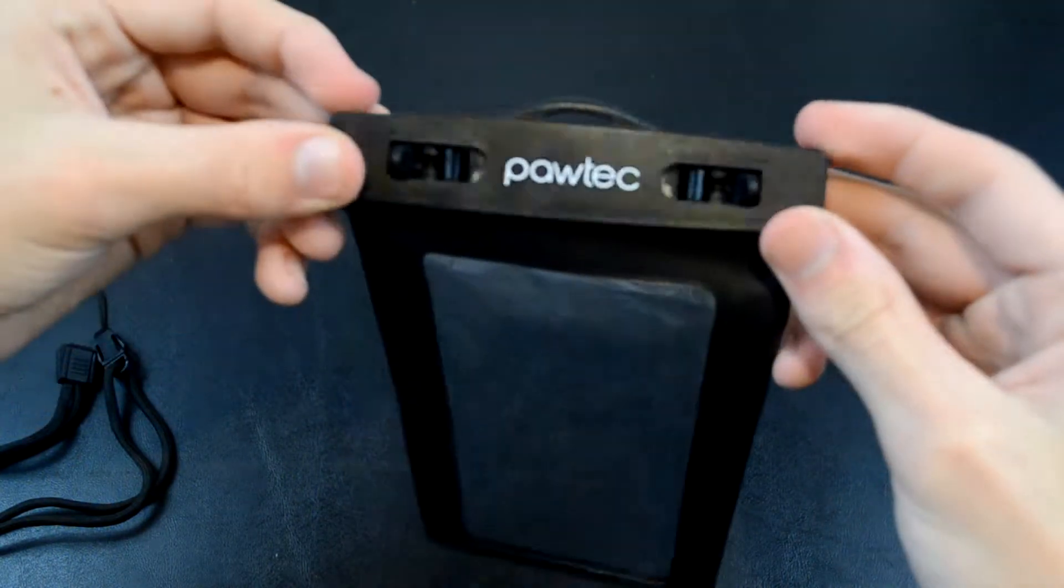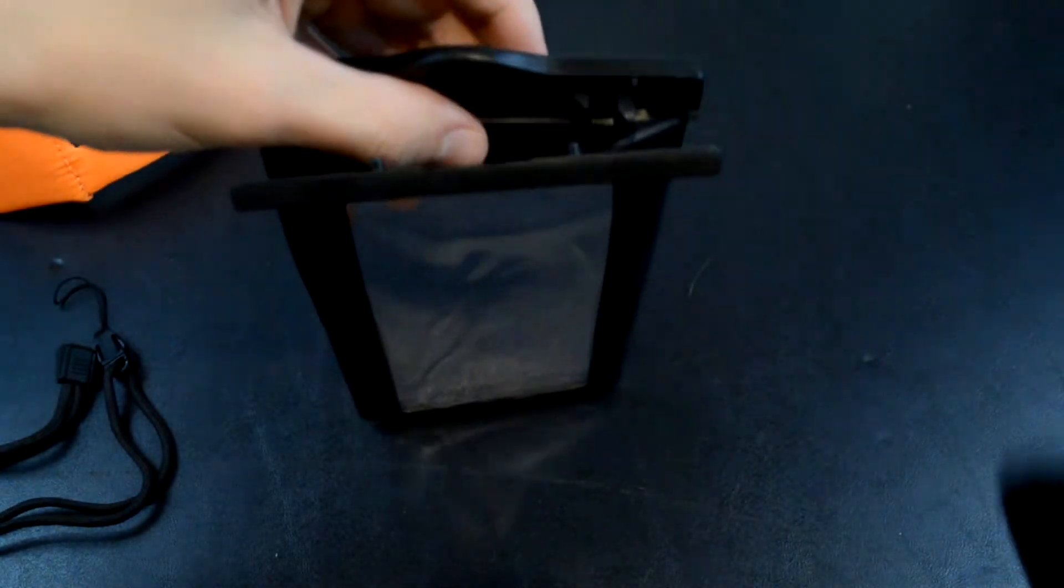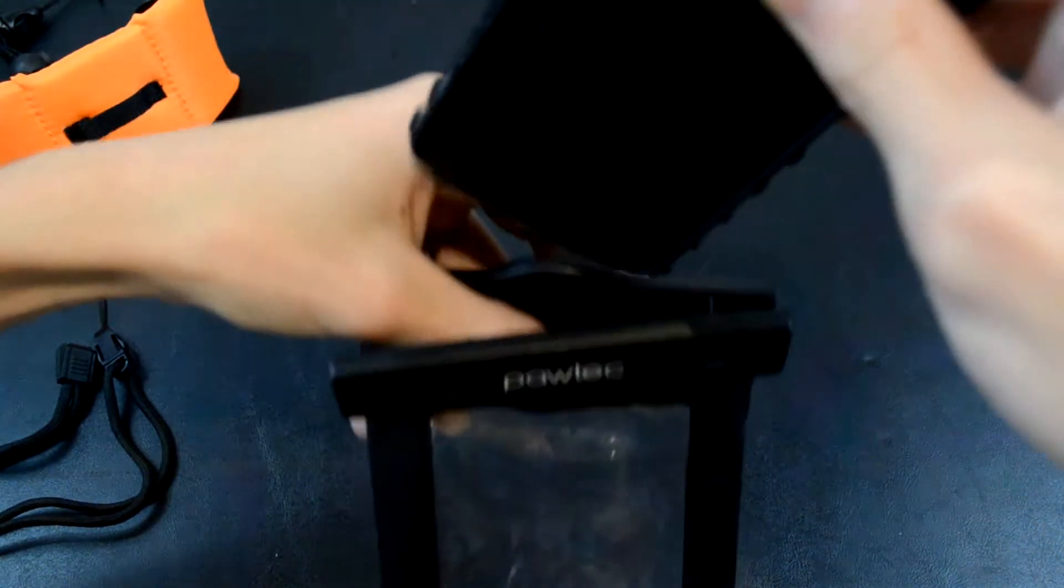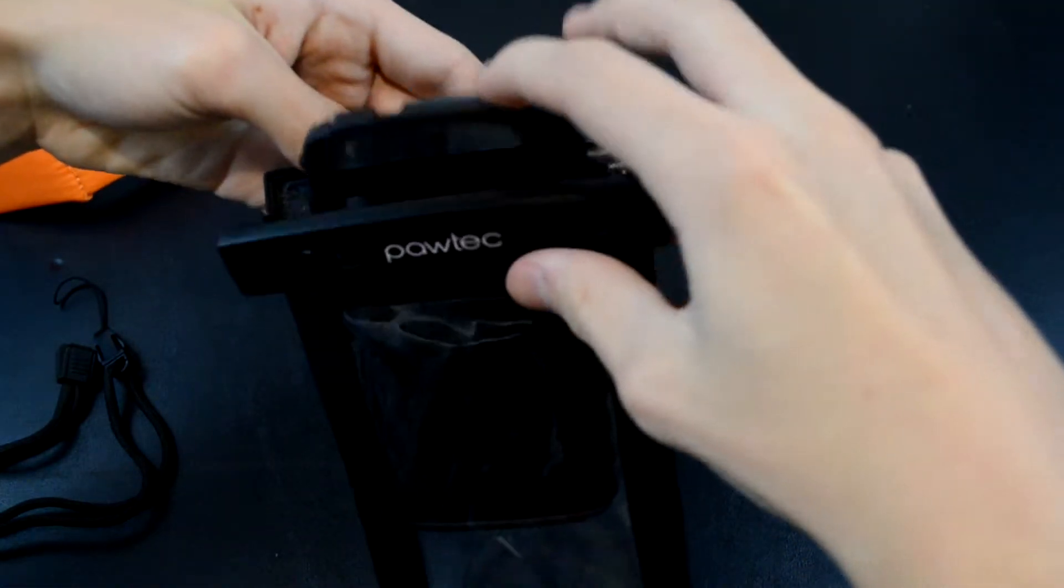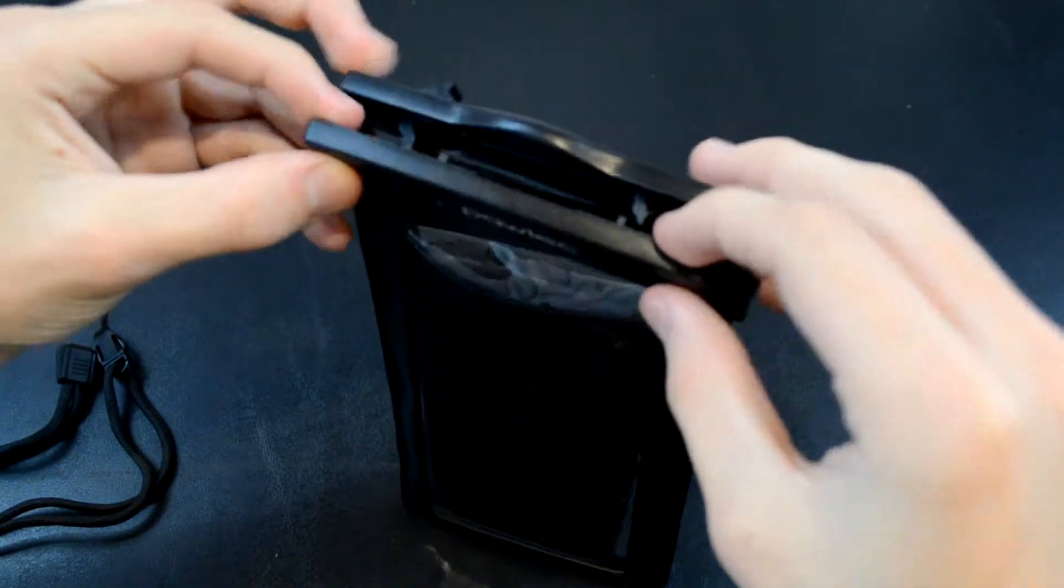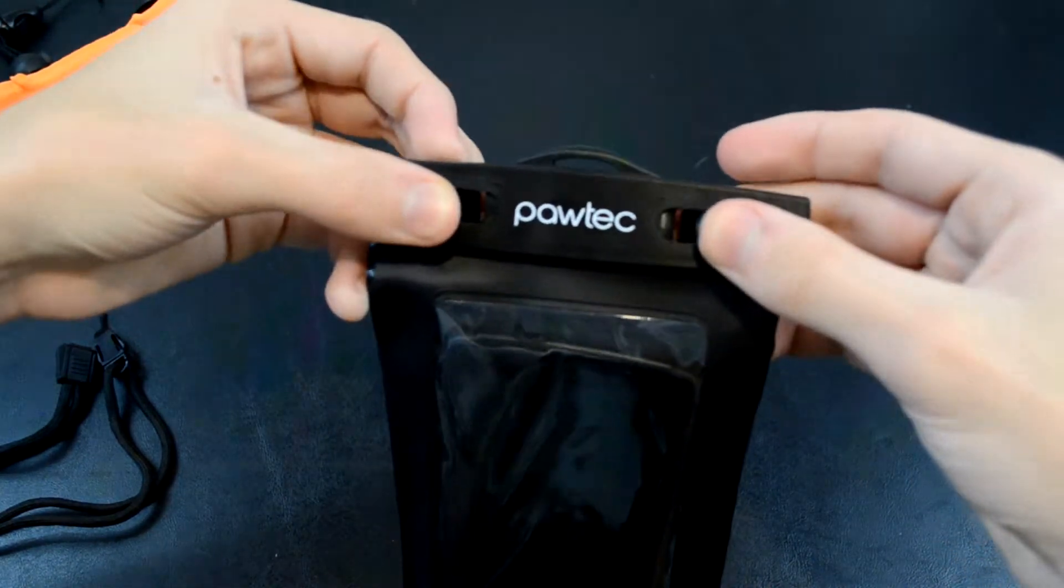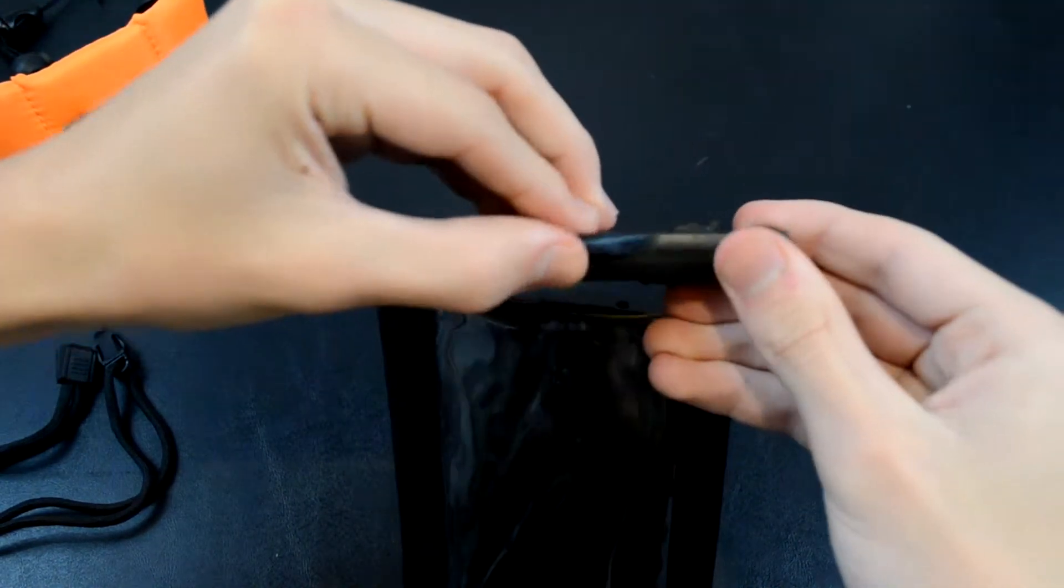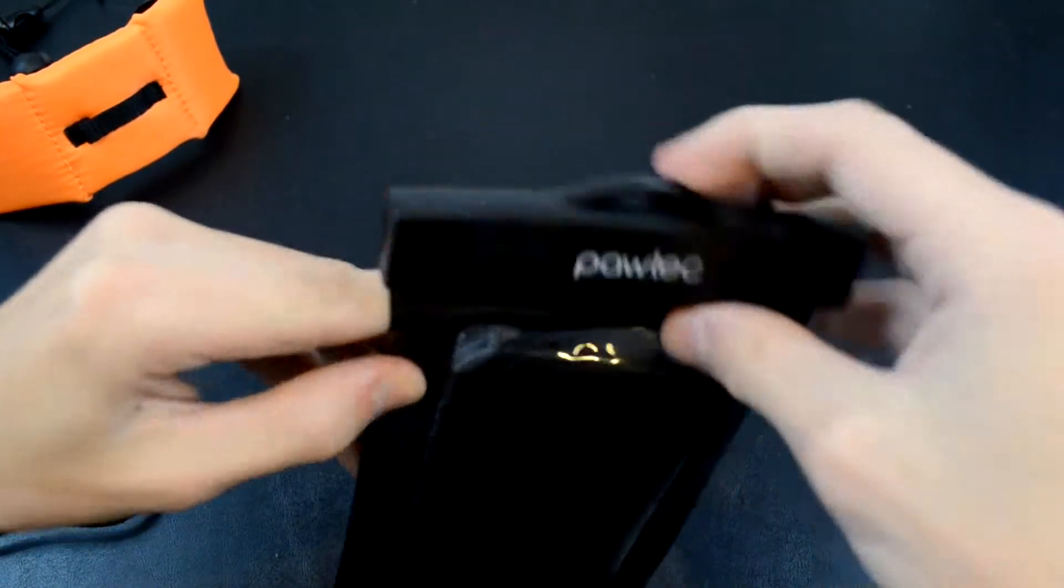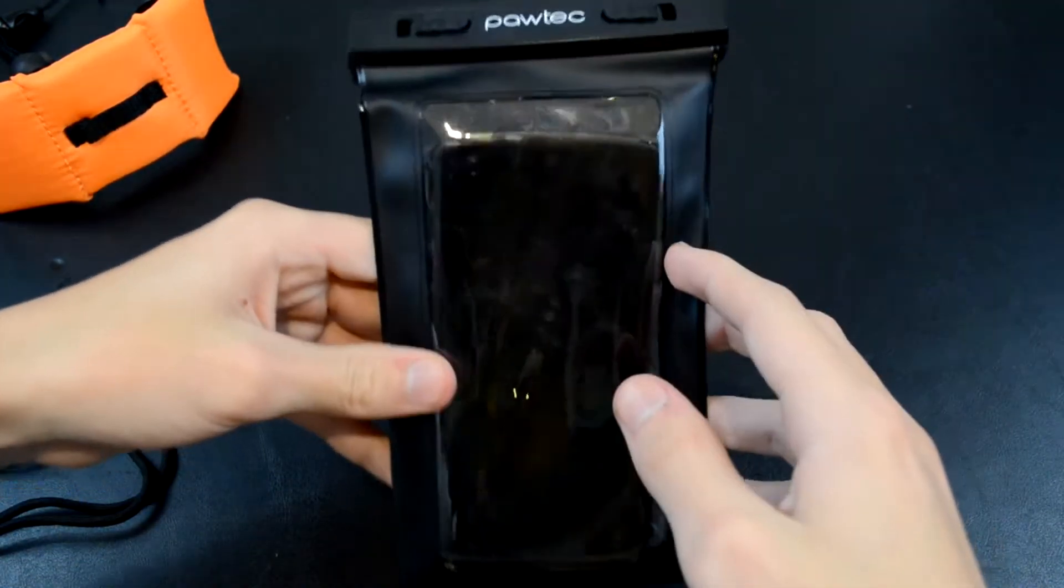That just opens up. I'll demonstrate by putting my Nexus 5 inside. You just keep it open, slip it in. It fits nice and snug. Push these locks back together, snap them back in place. Now it's secure. No water is going to get inside or anything. It's dustproof and a little scratch resistant too.